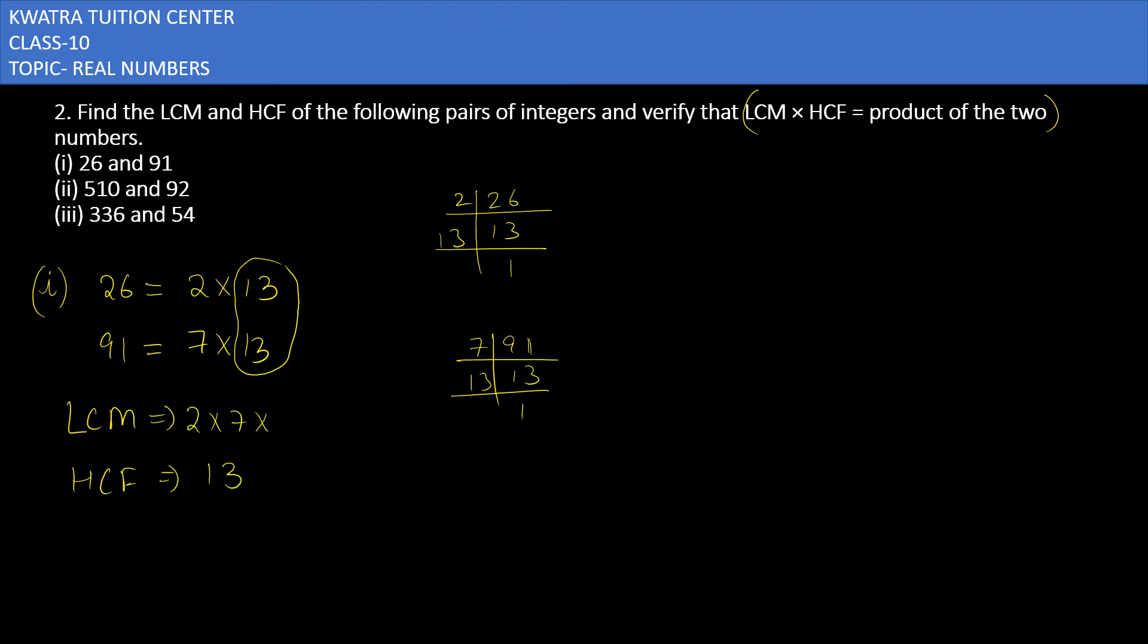In this case, the highest common factor is 13. The LCM will be the leftover part which is 2, 7, and 13. Just multiply these three to get 182, and the HCF is 13.